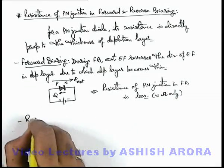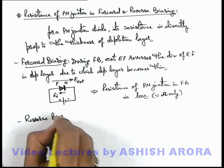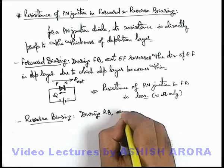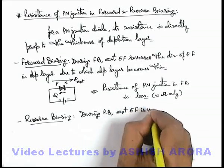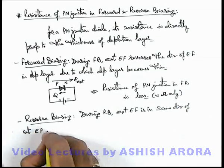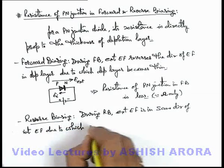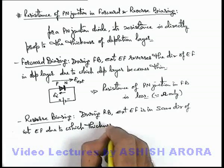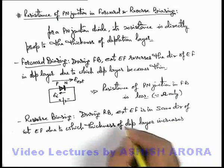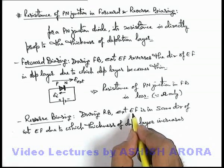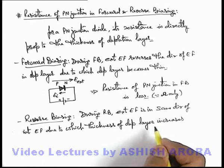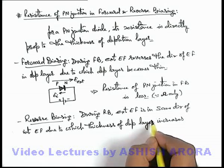Now if we talk about reverse biasing: during reverse biasing, the external electric field is in the same direction as the internal electric field. Due to this, the thickness of the depletion layer increases. This happens because the external electric field further opposes the flow of majority carriers, and majority carriers are pulled in the direction away from the depletion layer, so the neutral zone of the depletion layer becomes more and more thick.